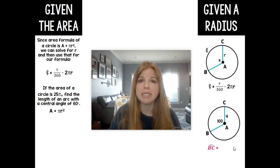So arc BC would be equal to 100 over 360, so the angle measure, times 2 times π times 4, times the radius r.